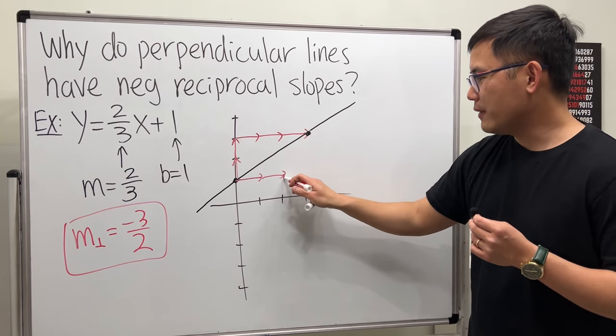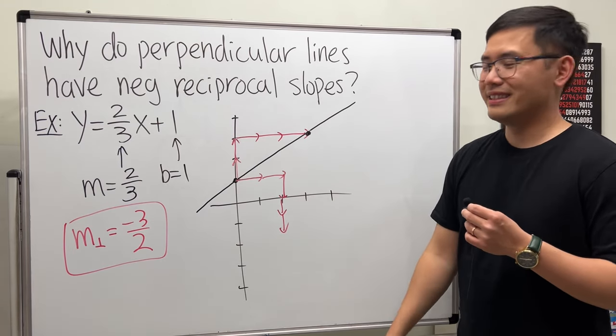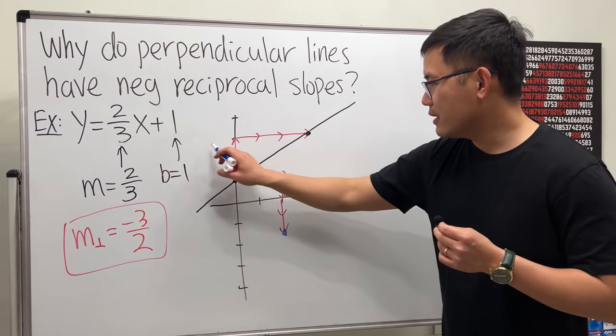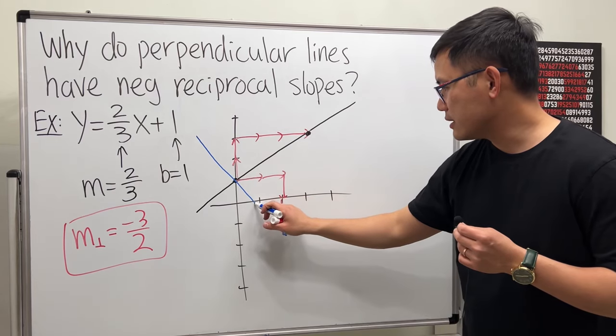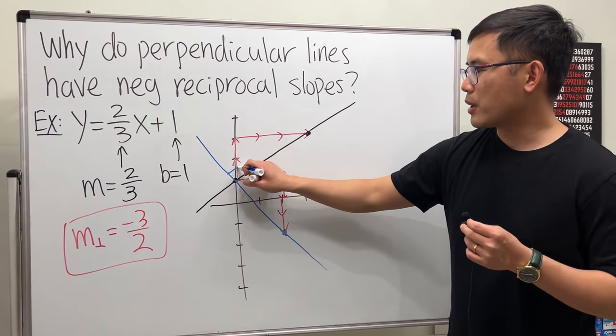So, we will actually start from here, and then we go down 1, 2, 3, 3 times. From here, if we connect these two dots, then we can see, this right here, for sure, is perpendicular.